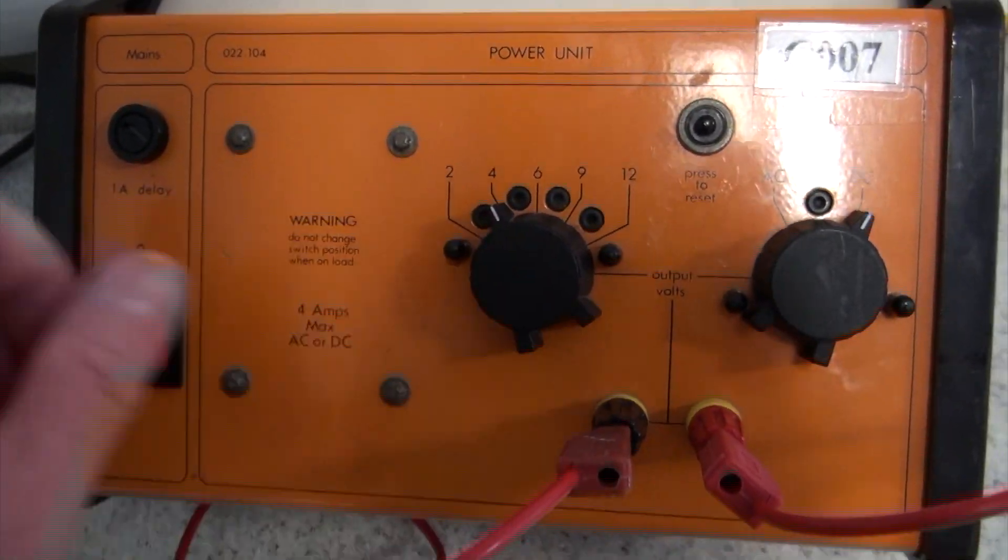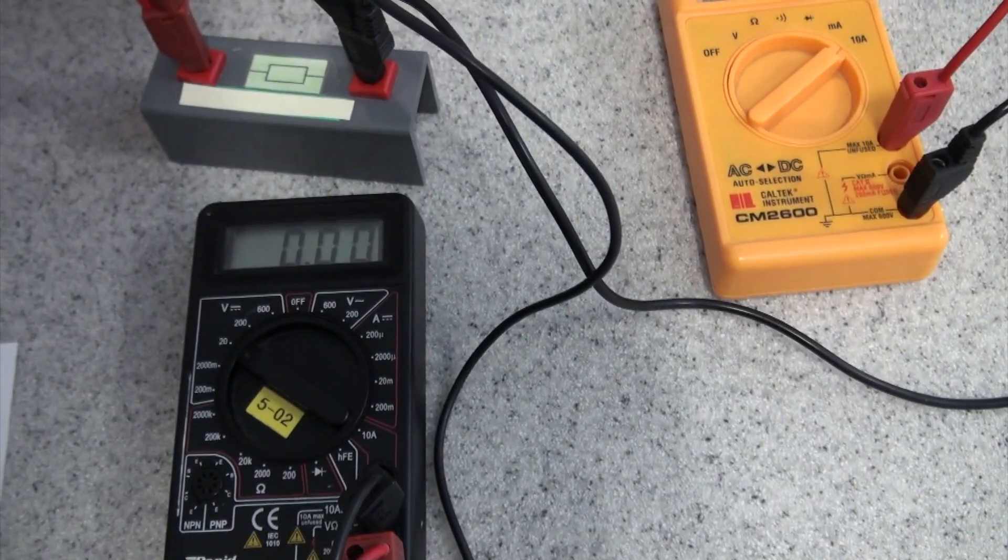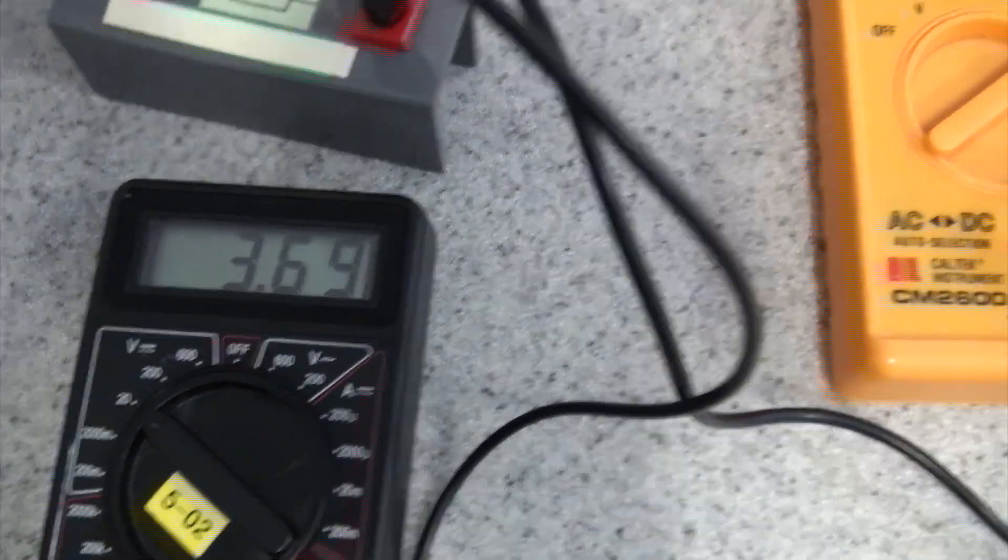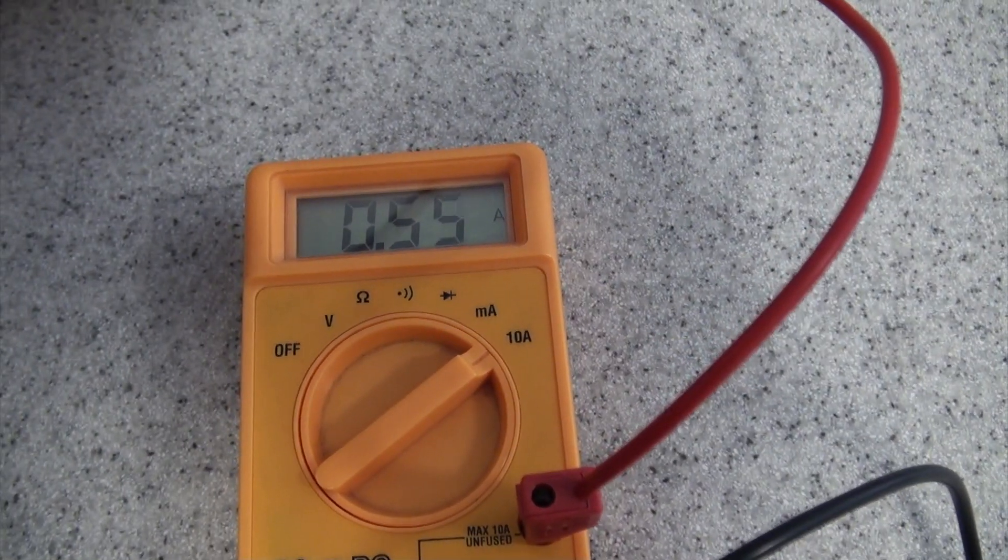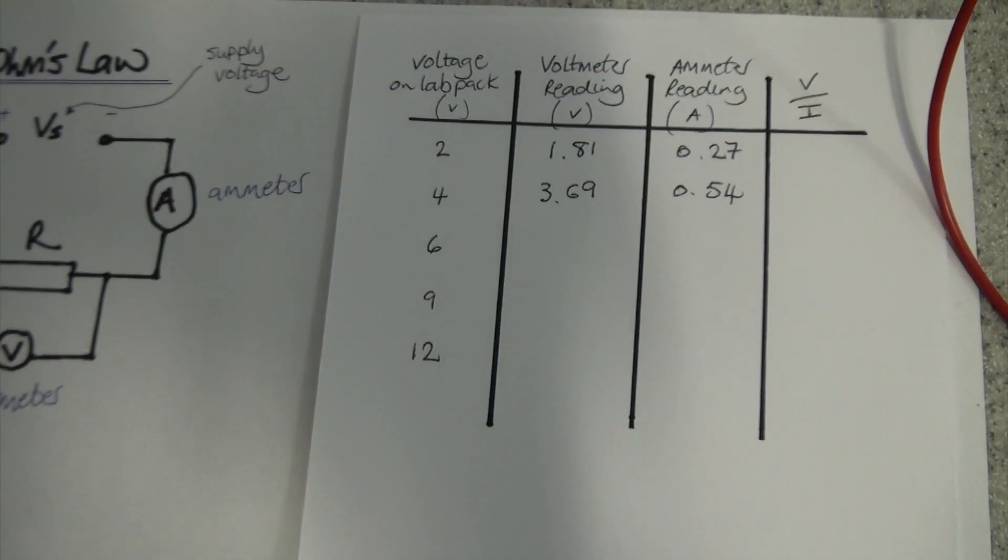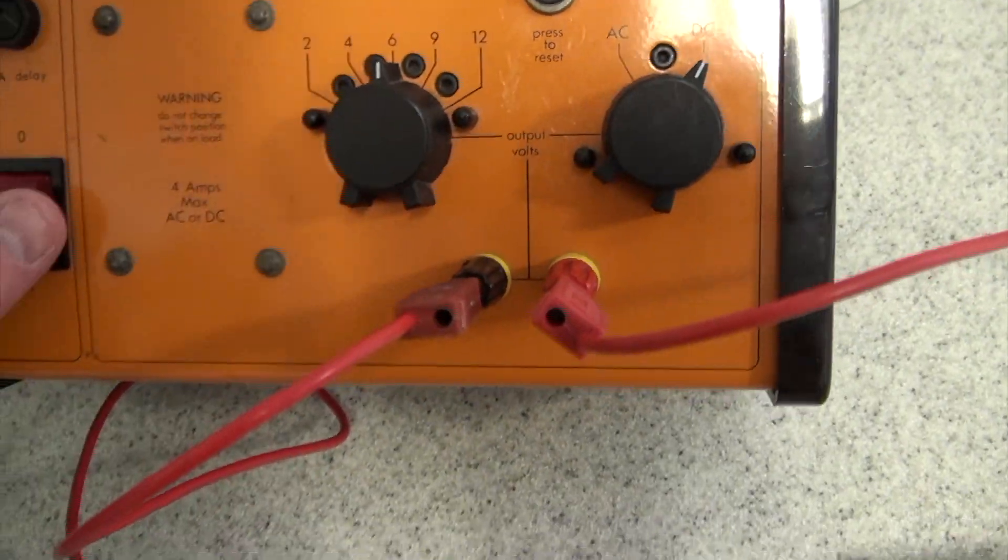That's for the 2 volts setting on the lab pack. Let's jot them down. Then we're going to repeat that at 4 volts on the lab pack. Turn on again. Repeat our measurements. 3.69, 0.54.